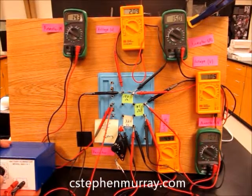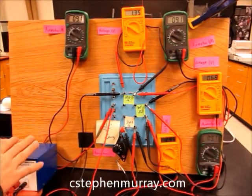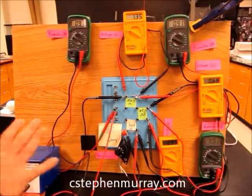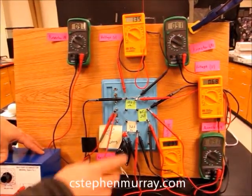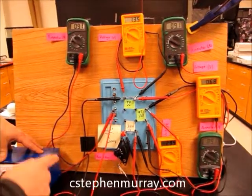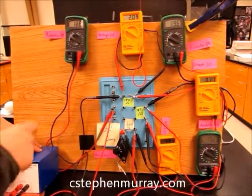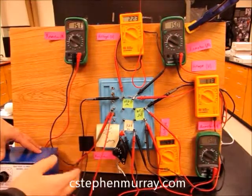I'll decrease the current by decreasing the push, the battery push. If the battery is supplying less voltage, then the current is less everywhere. If I increase the voltage, the current goes up everywhere.